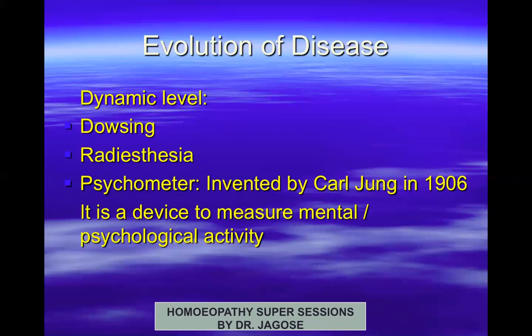Another method is known as the psychometer, invented by Carl Jung in 1906. A psychometer is a device used for measuring mental or psychological activity. It can also refer to a person able to deduce facts about events by touching related objects. The person places his hand on the patient's head and can tell what is wrong. As science progressed, these methods are now considered old-fashioned and are not used nowadays.